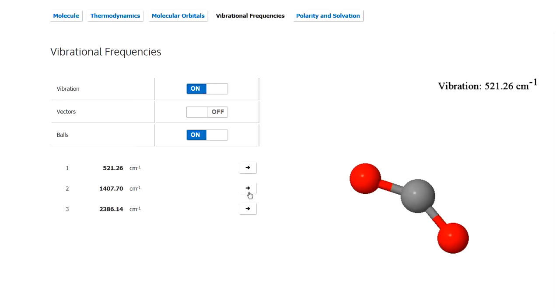Now, another vibration, this one here at 1407, 1408 almost, is infrared inactive. It doesn't absorb infrared light because although the polarity of each bond is changing, they're changing in equal and opposite directions. So there's no net oscillating dipole. It has zero dipole throughout this motion, so it doesn't absorb any infrared radiation at this frequency.